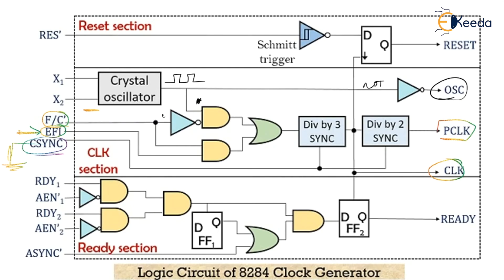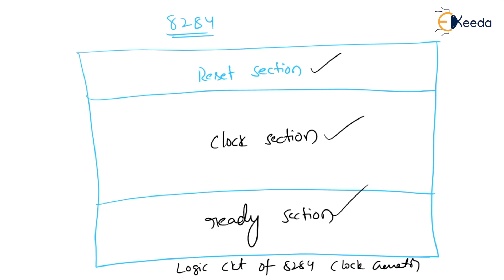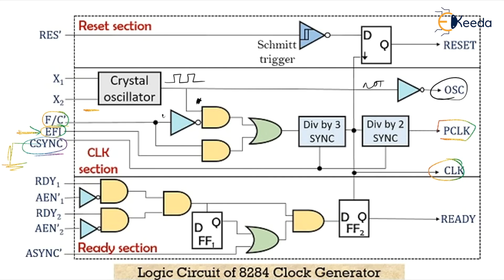Coming to the reset section: the 8284 reset section is composed of a Schmitt trigger and a D flip-flop. On each negative edge of the clock signal, the circuit applies a reset signal to the microprocessor. Initially, when power is first applied, the RC circuit gives logic 0 as input. Soon the capacitor gets charged through the resistor, completing the reset sequence.